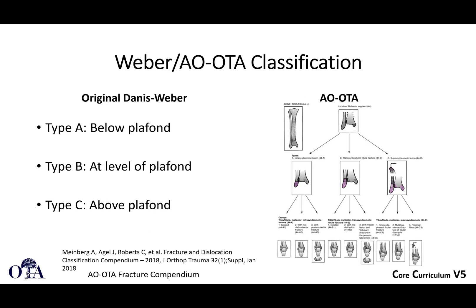The AO/OTA classification works a little bit differently than some of the other fracture patterns because it really does take into account Weber classification to some extent, which is really helpful. The original Weber classification looks at the fibula: a Weber A is a fracture below the plafond, a Weber B is a fracture at the level of the plafond, and a Weber C is a fracture above the plafond. The AO/OTA classification incorporates that in the classification as well.